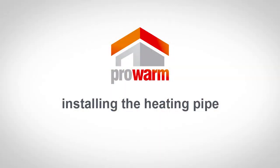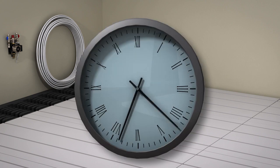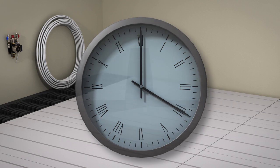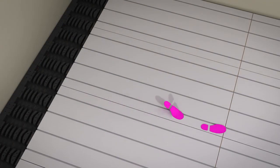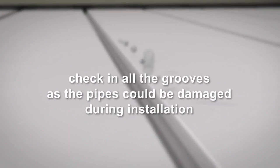Once the installation of the ProWarm overlay panels is complete, you are now ready to install the heating pipe. We recommend giving the glue one to two hours to dry before commencing with the pipe installation. The heating panels can withstand foot traffic without damage to the boards. Ensure your floor is free from any debris before installing the pipe. It is important to check in all the grooves as the pipes could be damaged during installation if there are any obstructions.